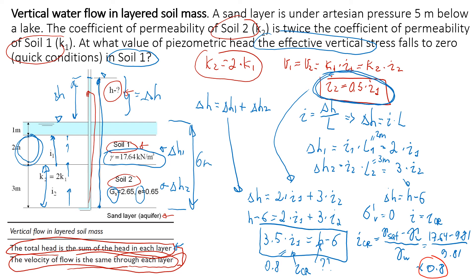Substituting i1 = 0.8 into 3.5·i1 = h - 6, we find that for critical conditions h ≈ 8.8 meters. This means when h increases and approaches 8.8 meters, soil liquefaction — quick conditions — will occur in the first layer.